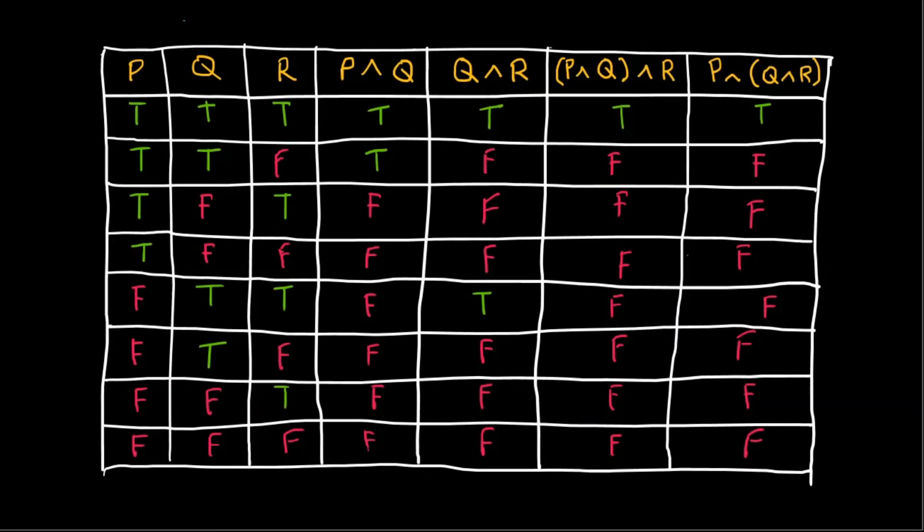Similarly, you can create a truth table for the second equivalence of the associative law. But the columns with compound propositions will be evaluated based on the logic of conjunction.